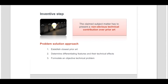An opinion is now formed as to whether or not it would be obvious for the skilled person, with knowledge of the prior art, to solve the problem posed in the manner described in the claim. Applying the problem-solution approach is more complex when the claimed subject matter consists of technical and non-technical aspects. We will now see how such a so-called mixed-type claim is examined.